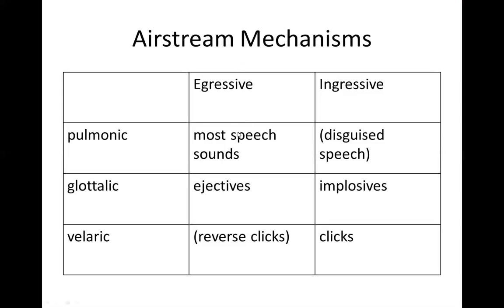Most speech sounds across all languages are pulmonic egressive. We can also talk on an inhale, though it sounds weird and we can't do it for very long. Sometimes people call that disguise speech because you don't sound like yourself. Other possibilities include ejectives, which are glottalic egressive; implosives, which intersect with glottalic ingressive; and clicks, which are velaric ingressive.